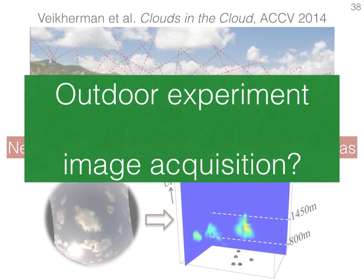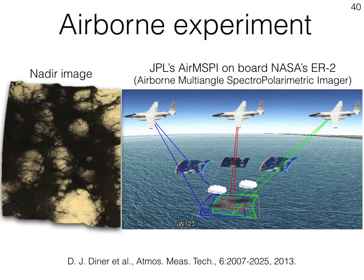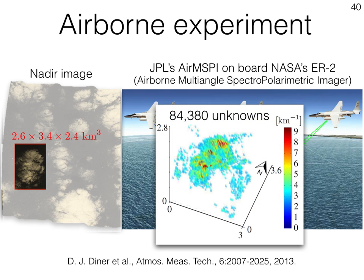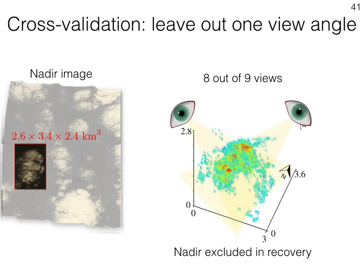Lastly, I want to describe an outdoor experiment. The question is, how can we acquire multi-views for such a huge outdoor field? In a previous work done in our group, a network of synchronized hemispherical field cameras was deployed outdoors to recover the shape of clouds. This setup, if radiometrically calibrated, could be used to perform a volumetric recovery. In this work, however, we used images acquired from a high altitude aircraft carrying the AirMISP instrument developed at NASA's JPL. We focused on a specific cloud to recover 84,000 unknowns, and this time we had no ground truth. We used cross-validation, leaving out one angle from the optimization process, then used the recovered cloud to render the left-out image and compare it to the acquired image.